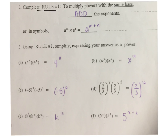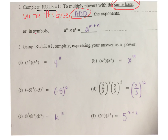Rule number 1: when multiplying powers with the same base — this is very important, it only applies if the base is the same — we add the exponents together. Write the base first, then add the exponents. So if the base is the same, you just write it down and add the exponents. In symbols: my base is A and my exponents are M and N, so M plus N. Check your answers.